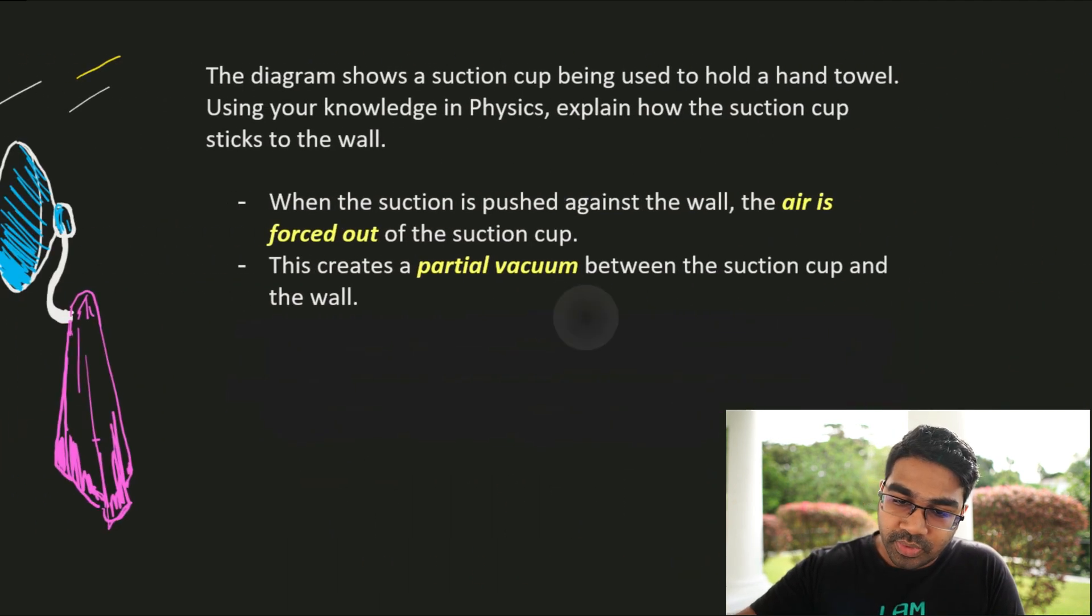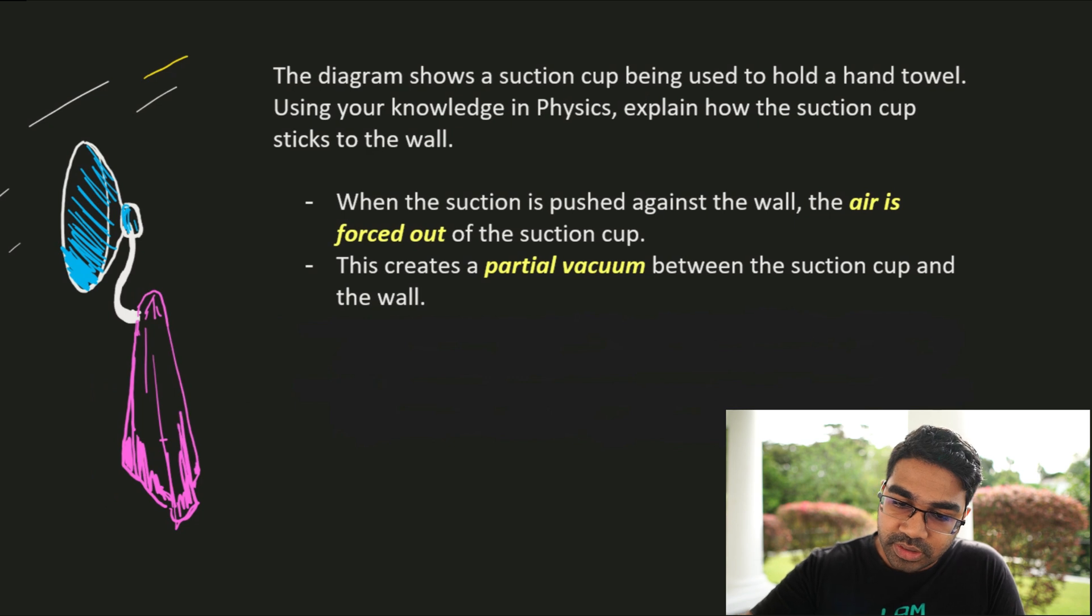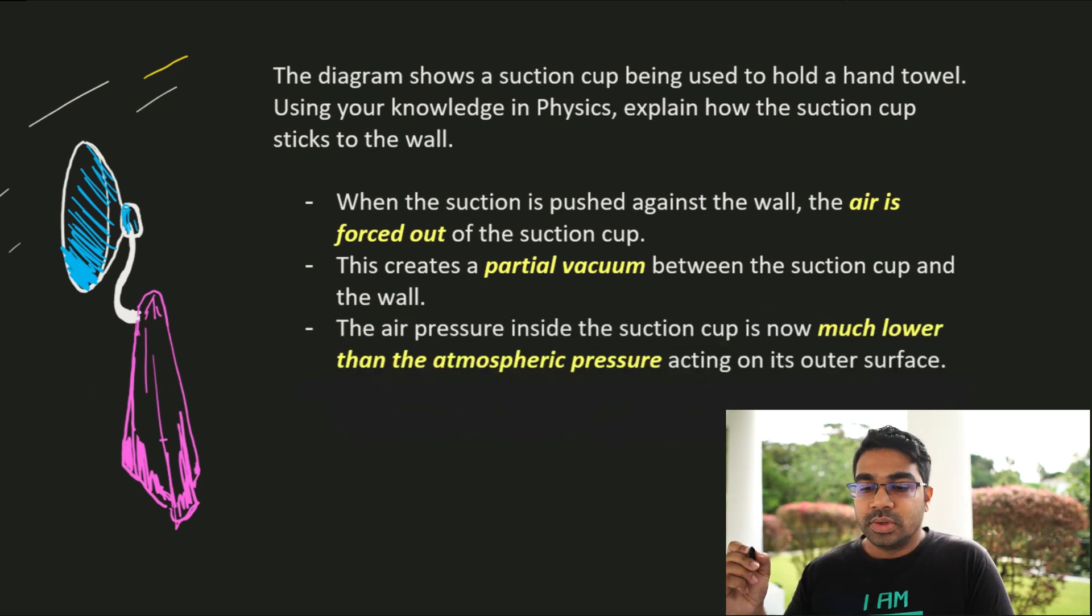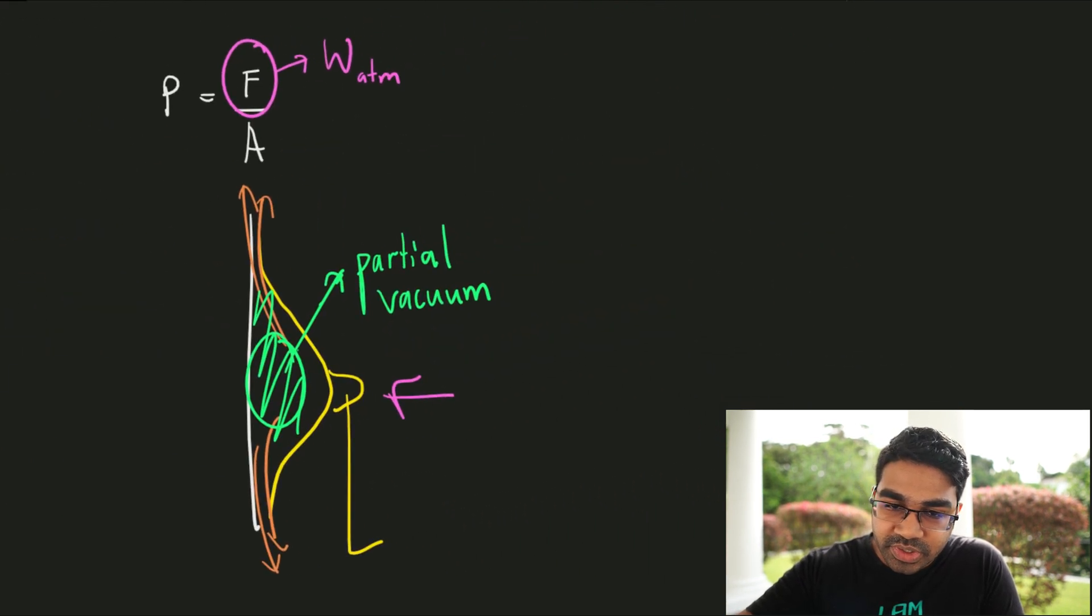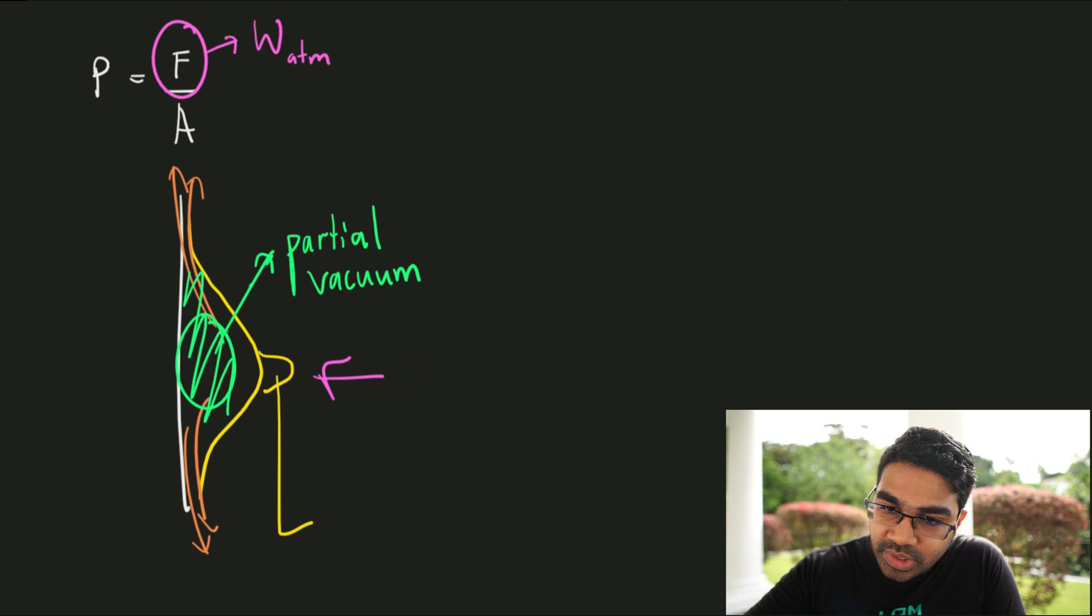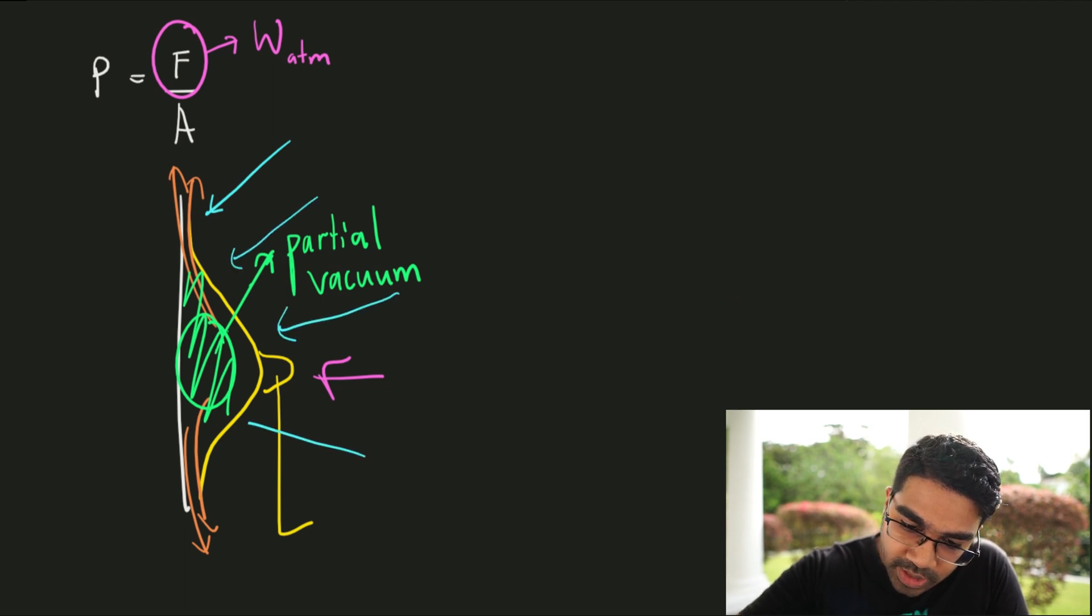So now, the pressure, the air pressure inside the suction cup is going to be much, much lower. And most importantly, it's much lower relative to the atmospheric pressure. This is where atmospheric pressure comes in. So where is atmospheric pressure acting? Atmospheric pressure is acting here, on the surface. Because this is the area that is exposed to the atmosphere.